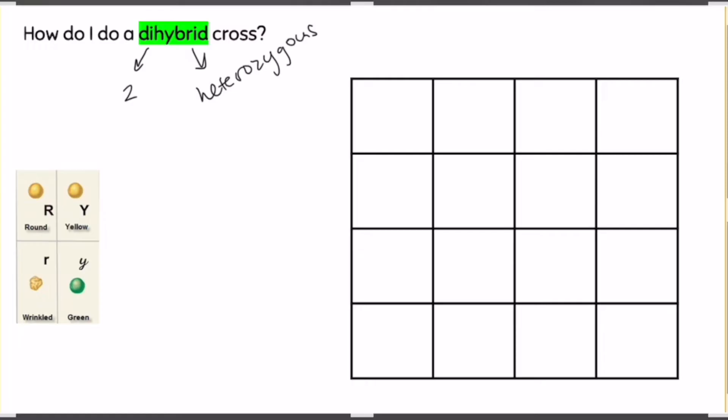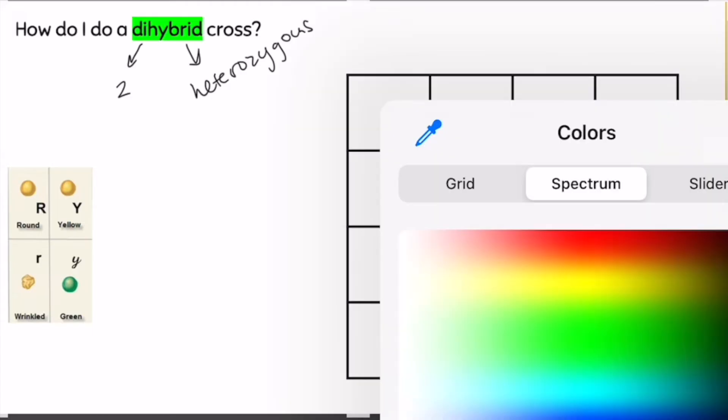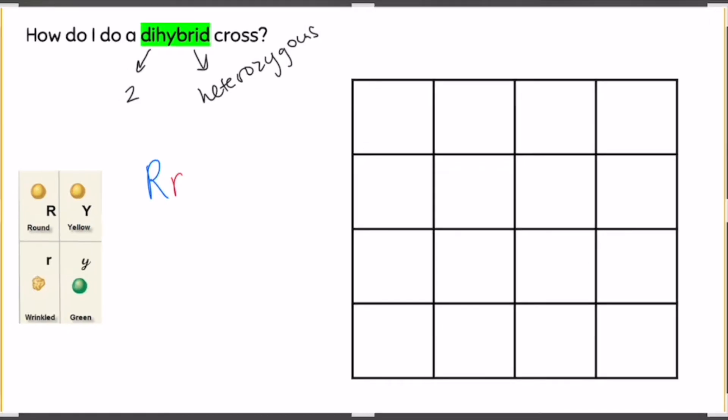I'm going to use colors so that I can tell the difference. Heterozygous for seed shape in peas would be round or wrinkly. I'm going to use red and blue so that we don't confuse it with color. So round, I'm going to do a capital blue R, and wrinkly, I'm going to use the lowercase red r.